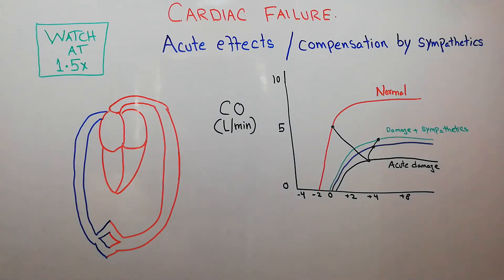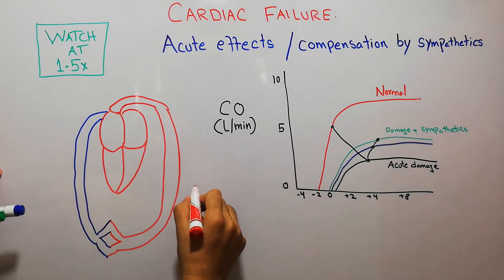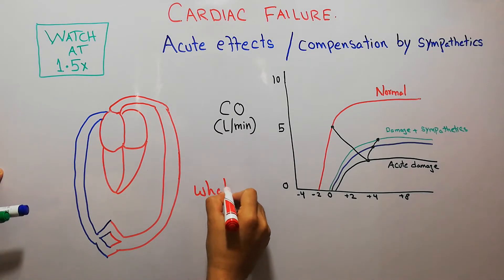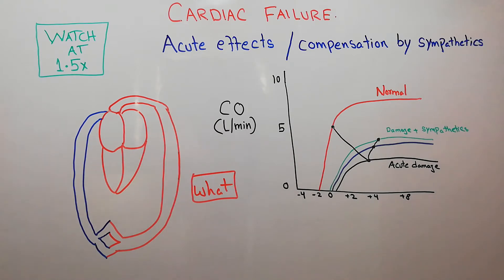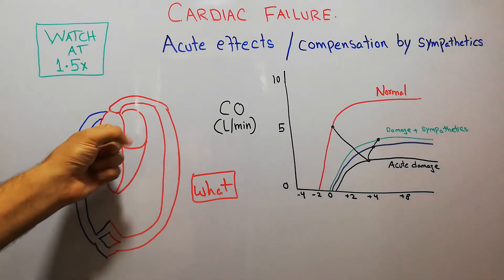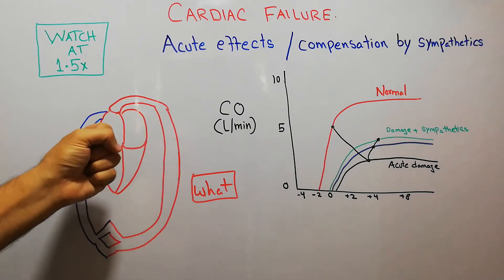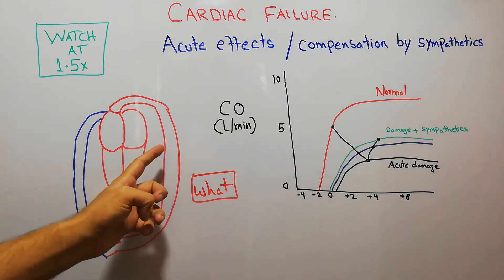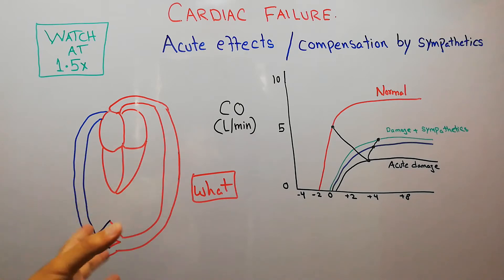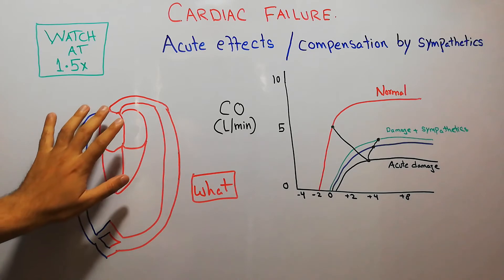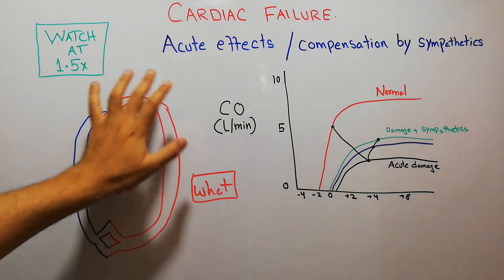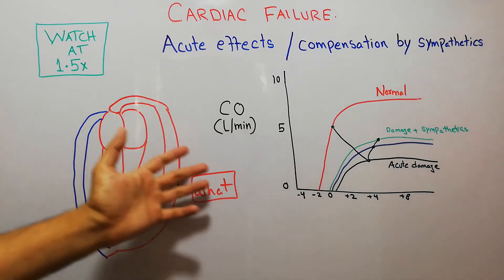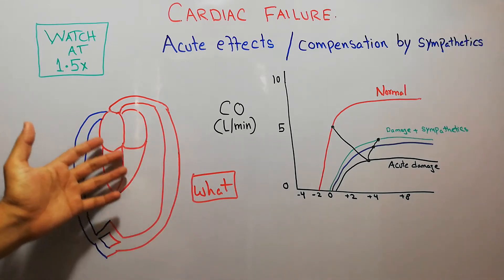First, we will define what cardiac failure is. The heart as a pump is continuously contracting and pumping blood into the aorta. The blood from the aorta goes into the peripheral arteries, supplies nutrients and oxygen to the peripheral tissues, and then the deoxygenated blood returns to the heart, is pumped into the lungs, and oxygenated blood comes back for the heart to pump again.